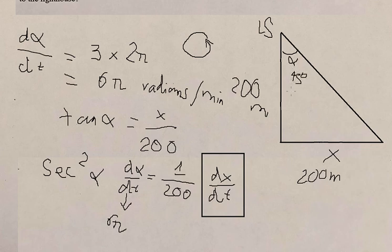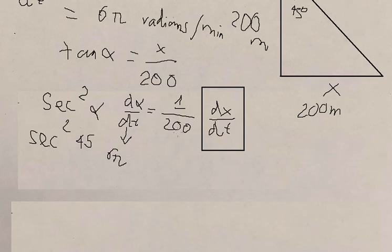So we put sec² of 45 squared, and now we have 200, we multiply both sides with 200, and you can get the final answer.